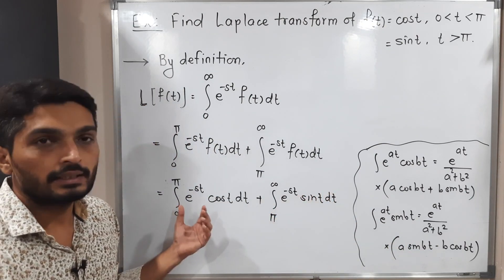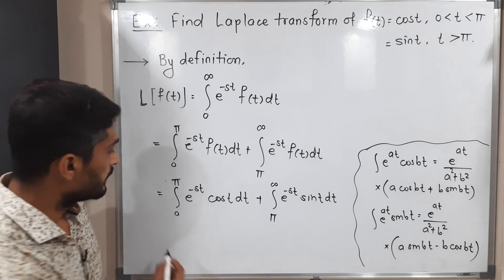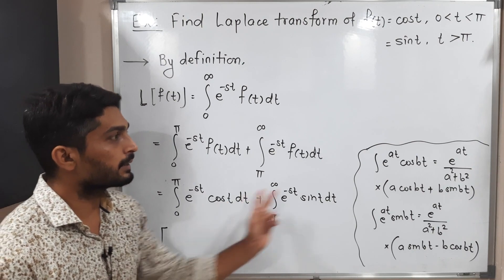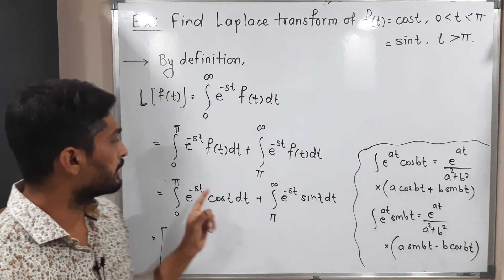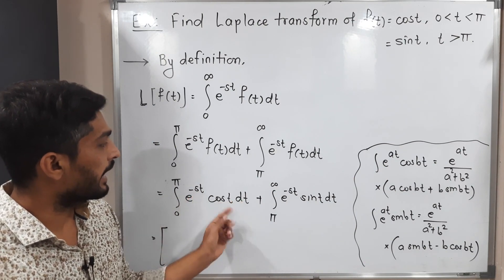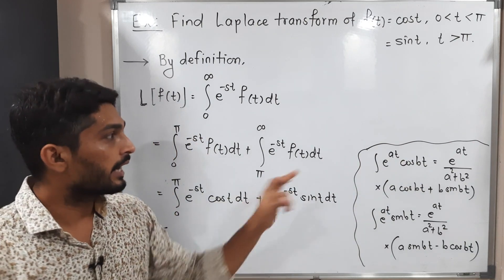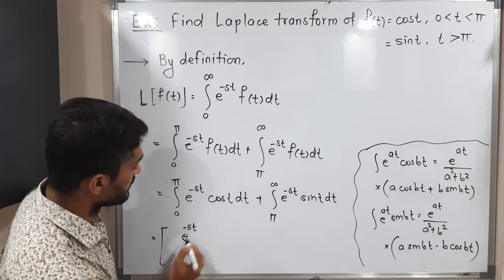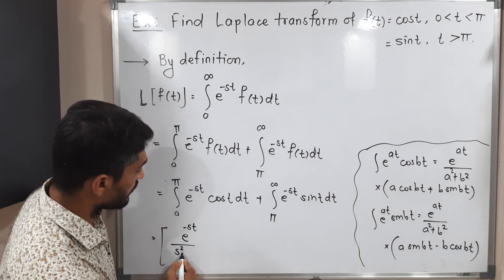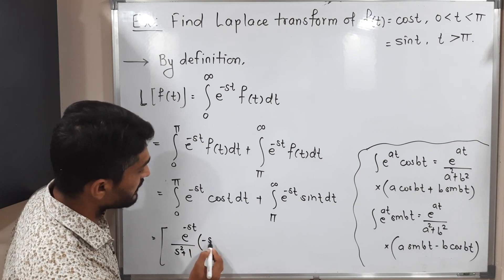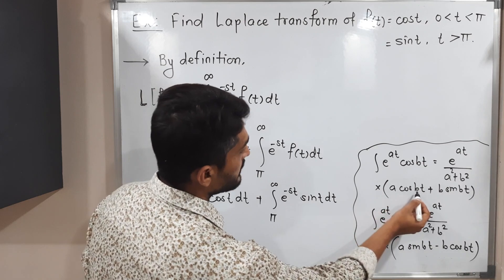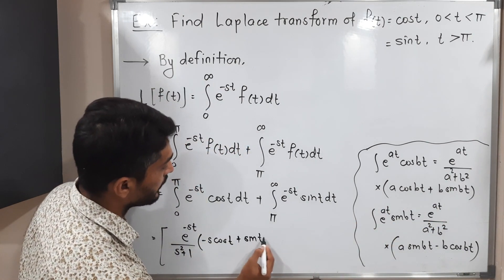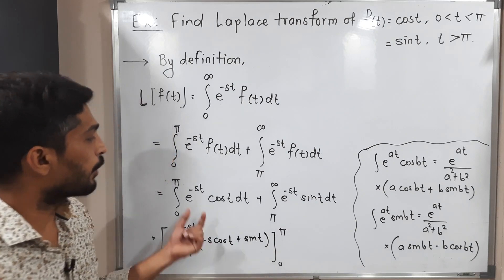We can directly compare our integrals with these formulae. For e^(-st) cos(t) dt, comparing with the cos formula: the multiplier of t is minus s, so a equals minus s, and the angle is t only, so b equals one. Substituting: e^(-st) divided by (s² + 1), times (minus s cos(t) plus sin(t)), evaluated with limits zero to π.